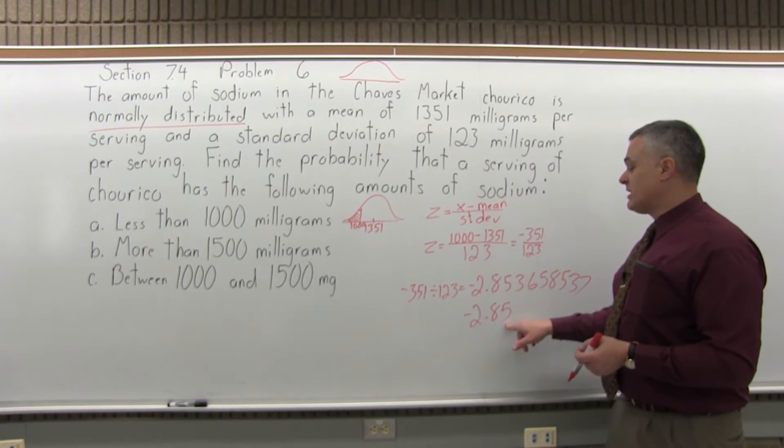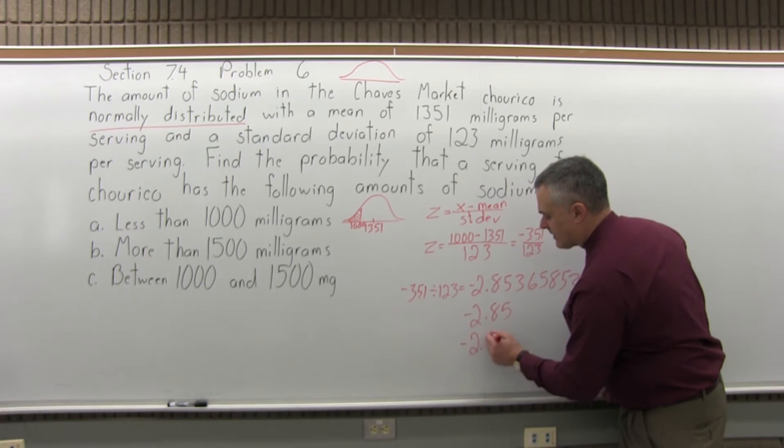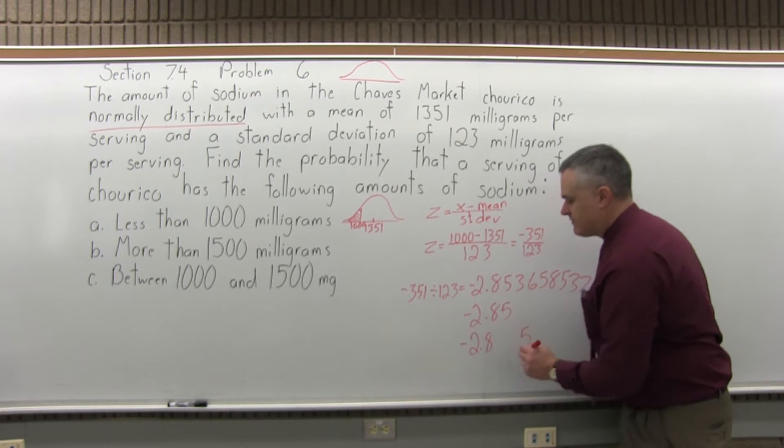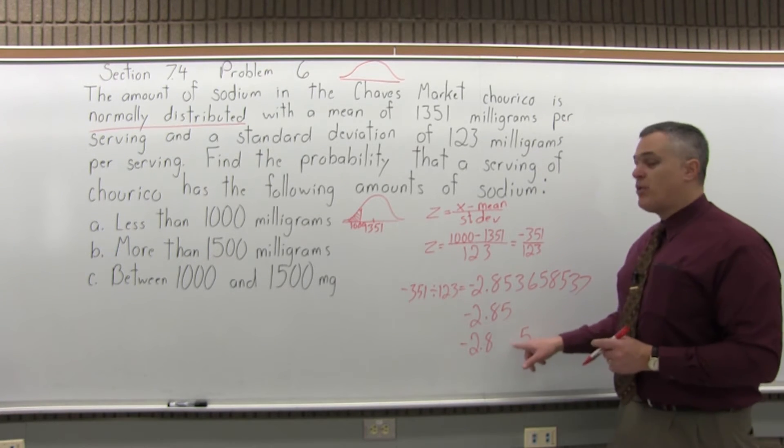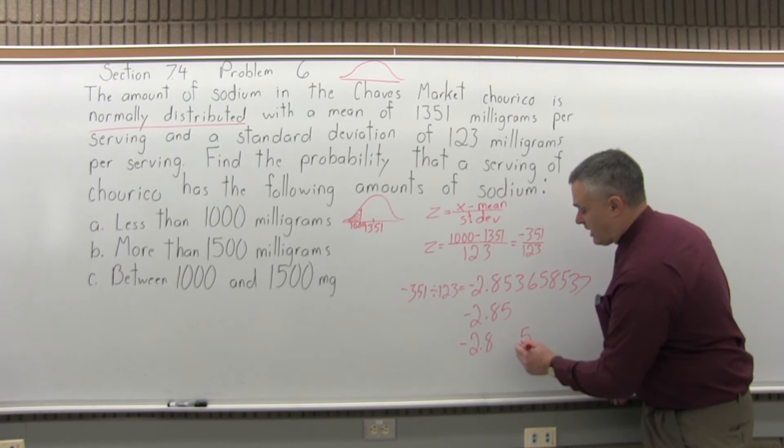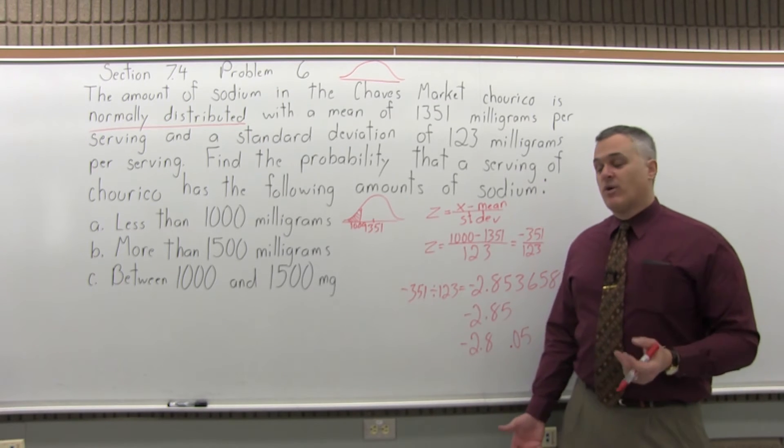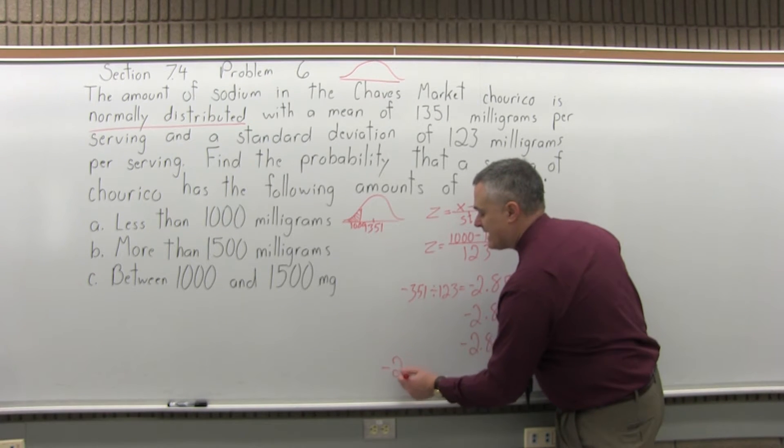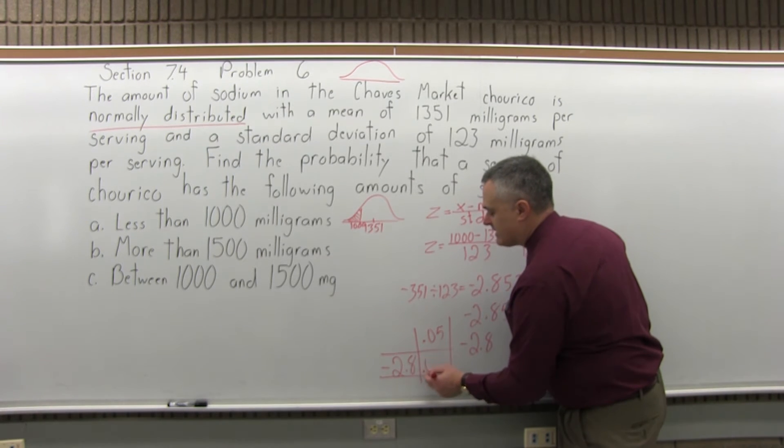The next step is to split the number into two parts by pulling off the rightmost digit. So the 5 gets pulled off to the side. After that, we put a .0 in front of the rightmost digit that we pulled off, so it becomes .05. Now go to the standard normal chart, look in the negative 2.8 row, make sure you don't miss the negative, the .05 column, and where they intersect will be .0022.